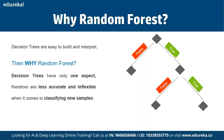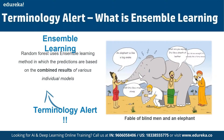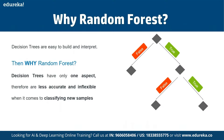Before discussing random forest in depth, we need to understand how decision trees work. Let's say we want to buy a house but are unable to decide which one to buy. We consult a few agents and they give us a list of parameters to consider: price of the house, locality, number of bedrooms, parking space, available facilities. These parameters are known as predictor variables, used to find the response variable.